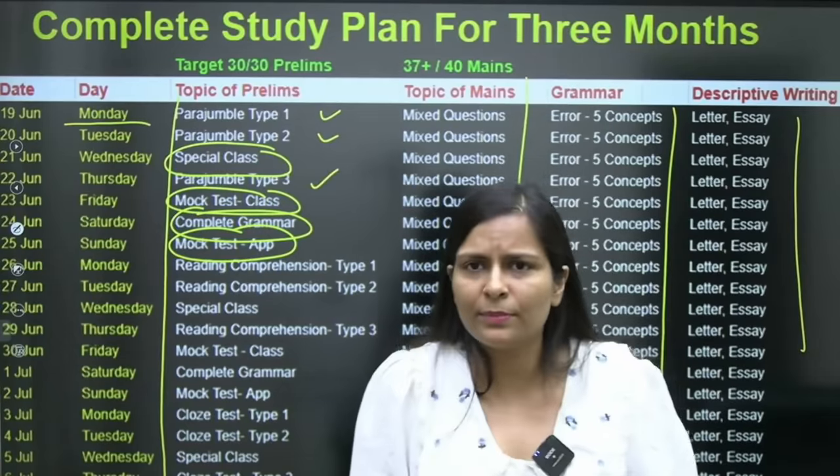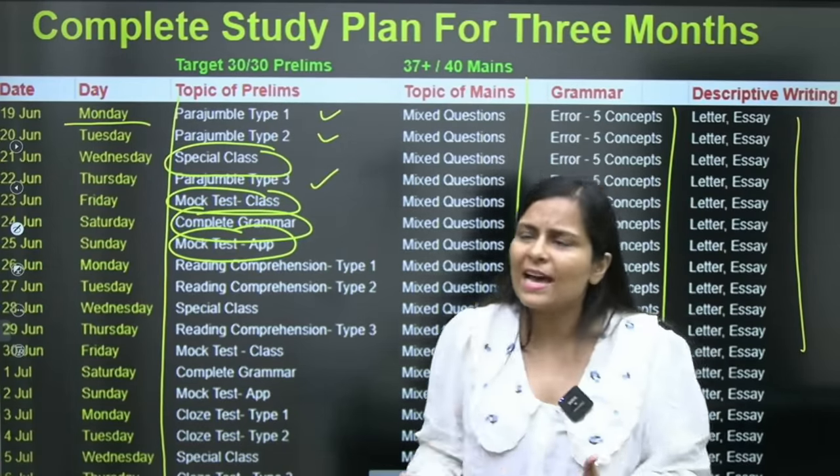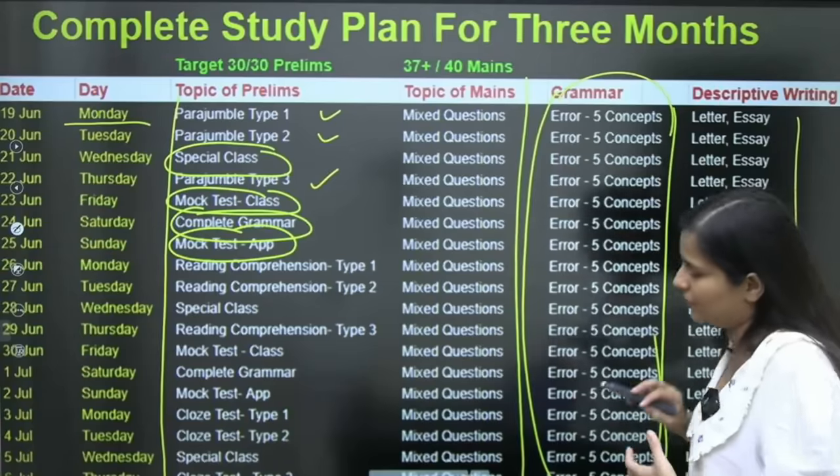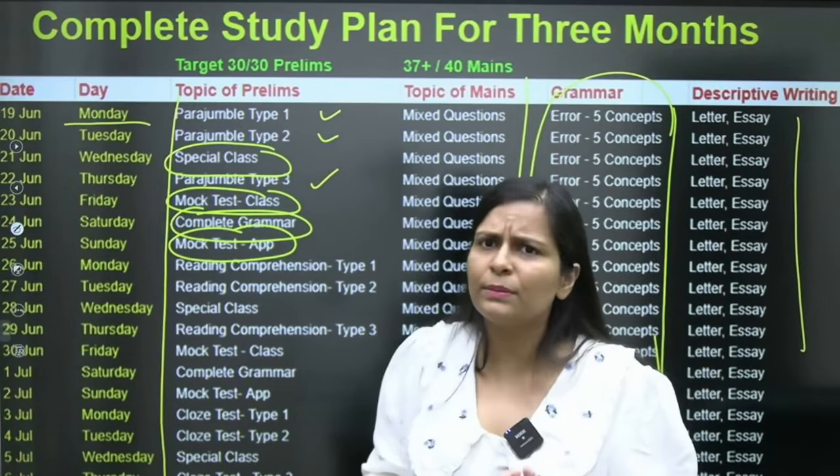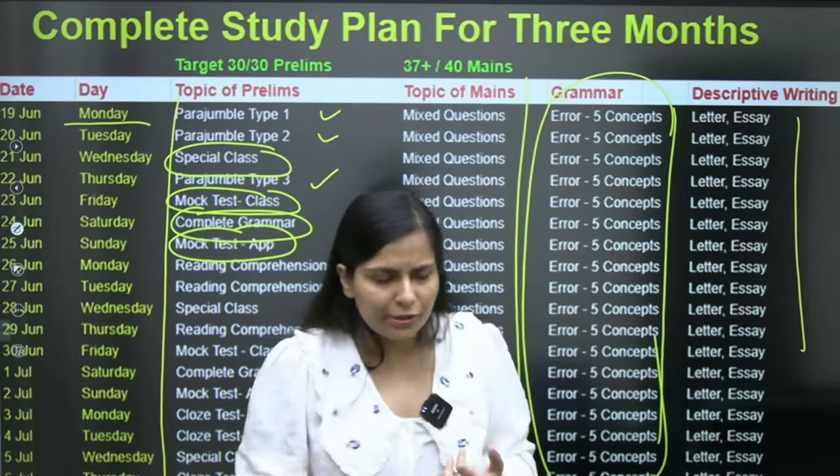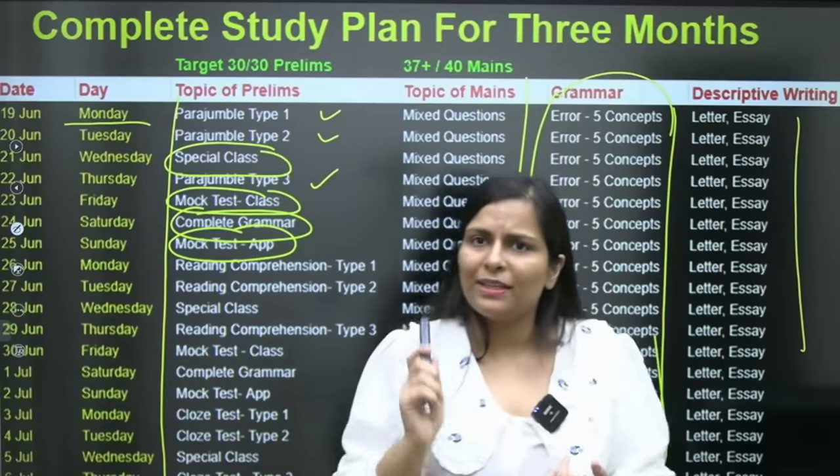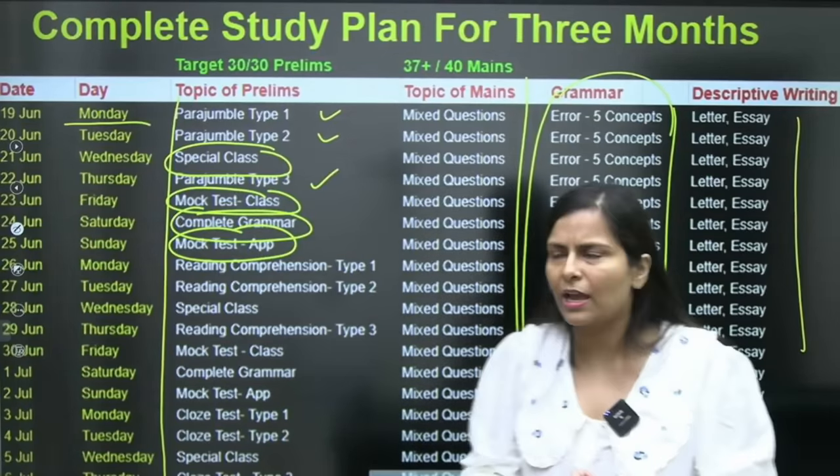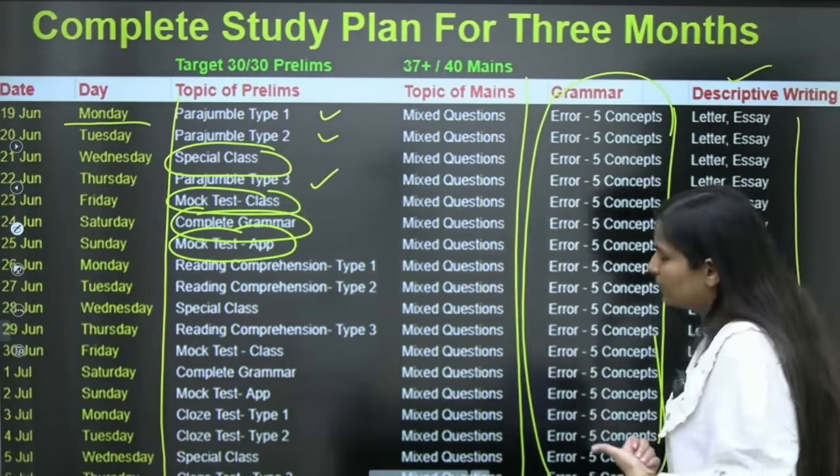In the first 1 hour 15 minutes, we will do prelims and mains. In the last 15 minutes, we will do 5 questions. We will do grammar daily, so our grammar will improve. Our prelims will be prepared, our mains will be prepared, and you will come to the editorial class. In the morning, you will have vocabulary and descriptive writing.